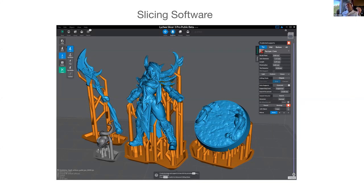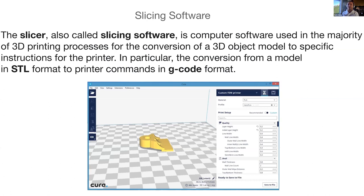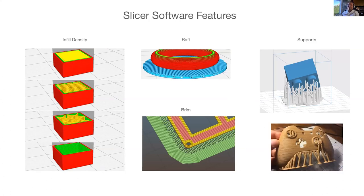Once the file is outputted as a 3D format, it goes into slicing software. The slicer is computer software used in the 3D printing process for conversion of a 3D object model to specific instructions for the printer. In particular, the conversion from a model in STL or OBJ format to printer commands is in something called the G-code format. Slicers have features specific to the machine they're outputting for.